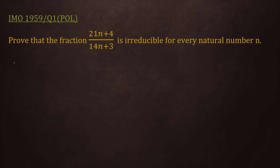Hi friends, this is Prakash. Today I have an interesting question from the very first International Mathematical Olympiad hosted by Romania, and the problem was proposed by Poland. The problem is: given as proof that the fraction 21n plus 4 divided by 14n plus 3 is irreducible for every natural number n.